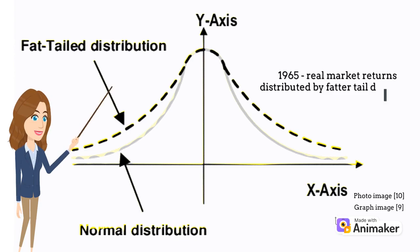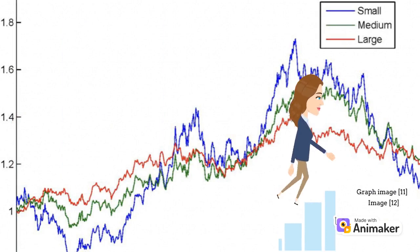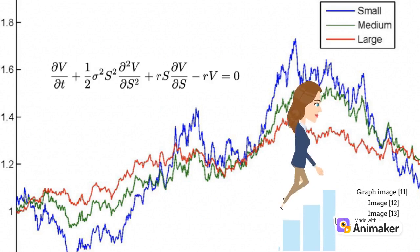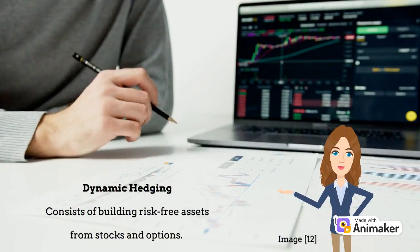Fisher Black is perhaps one of the most recognized names in finance. He was a trained physicist and made a significant contribution to the Black-Scholes model for option pricing. Some have credited him with making physics an essential part of investment banking. Black's strategy, now called dynamic hedging, consisted of building risk-free assets from stocks and options. He collaborated with Scholes to derive the Black-Scholes equation, which debuted in 1973.